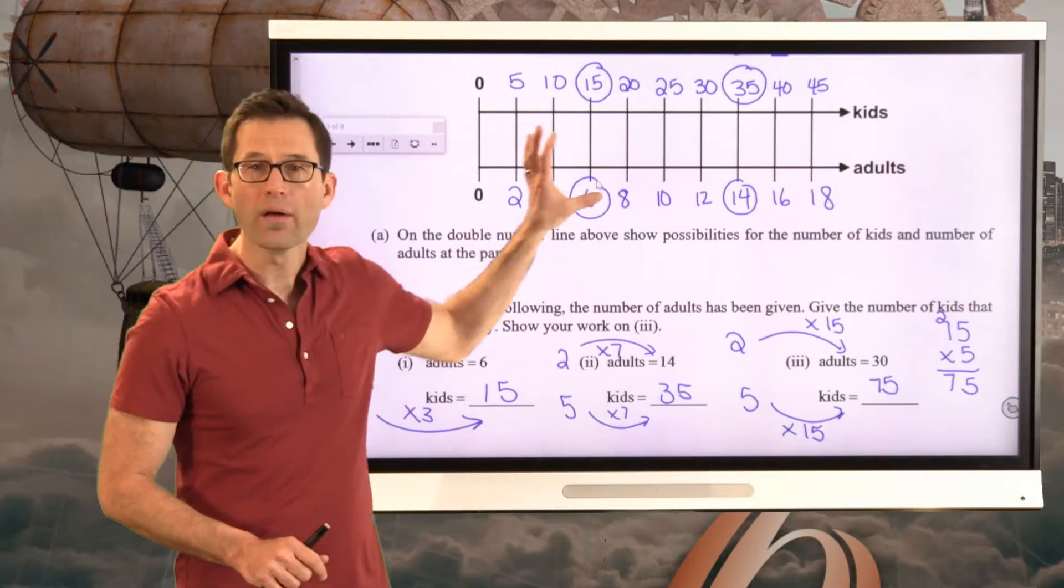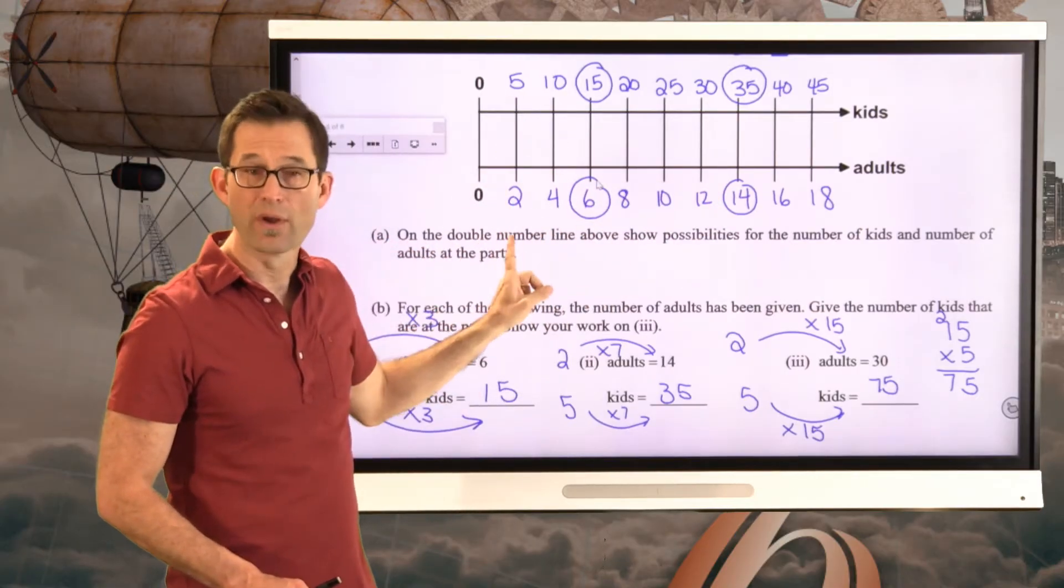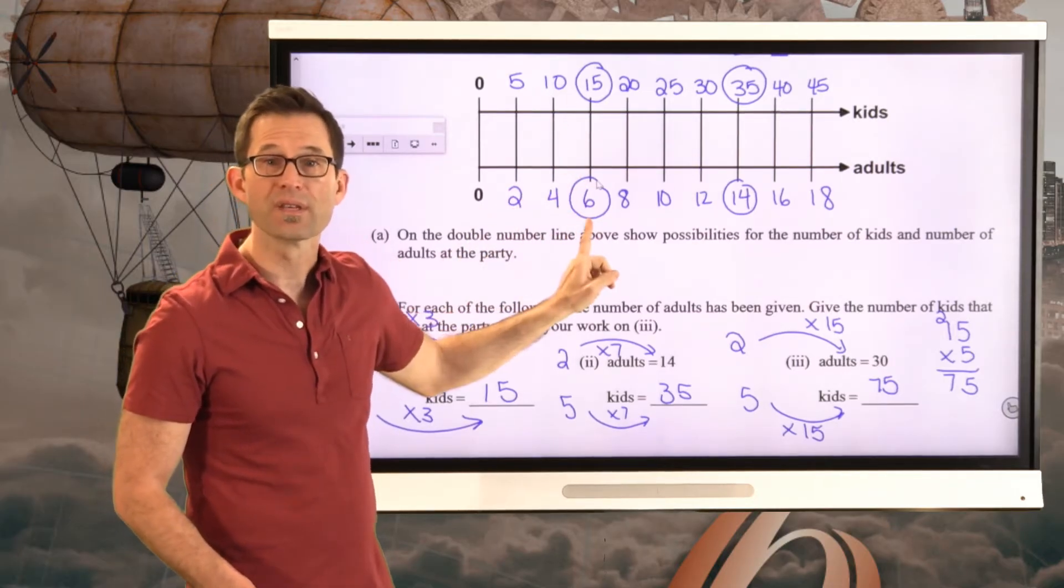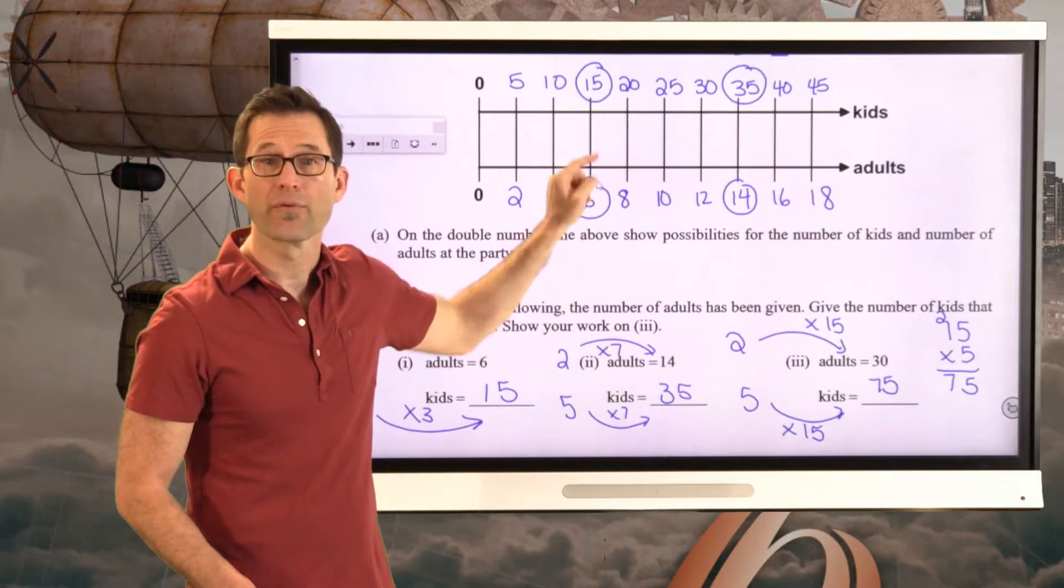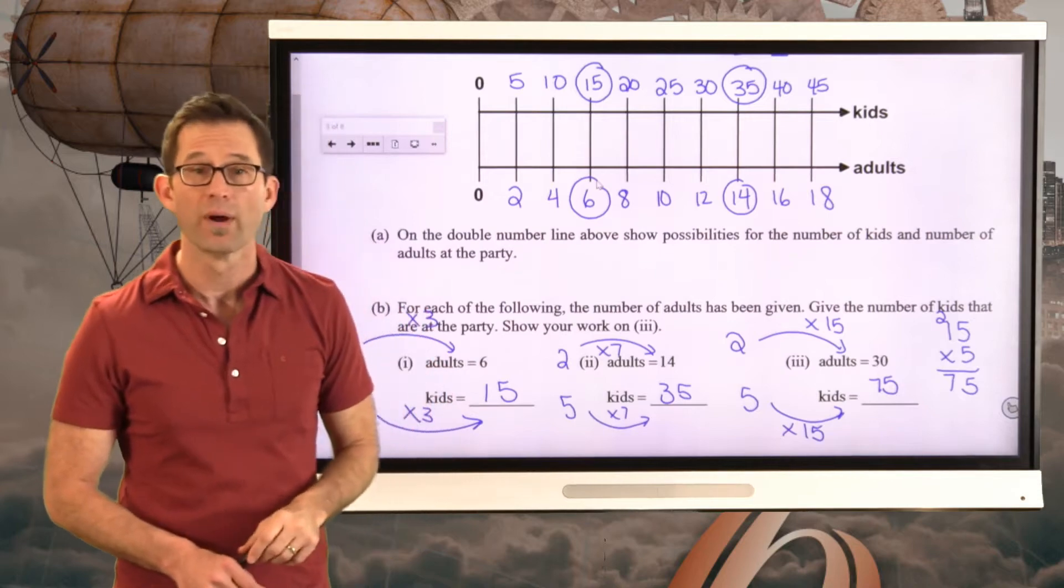And really, that's what all of these numbers represent. This 5 to 2, that's just that ratio 5 to 2. But then 10 to 4 is taking that ratio, multiplying by 2. 15 to 6 is taking that ratio, multiplying by 3. 20 to 8, taking that ratio and multiplying by 4, etc.